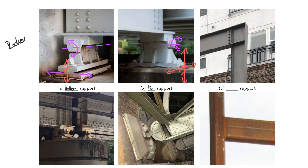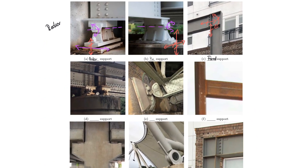The last type is called a fixed support. In this case, all aspects are prevented: this direction cannot move, it cannot move up and down, and because of the bolts connecting this beam rigidly to the column, the system cannot rotate or turn about a pin axis either. So those are the three different support types.